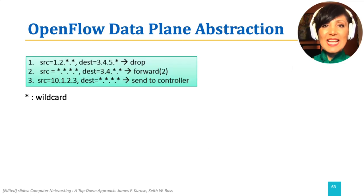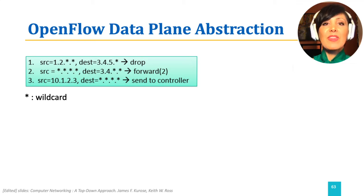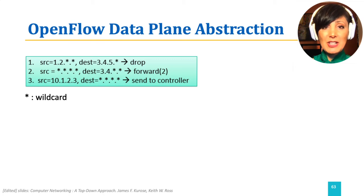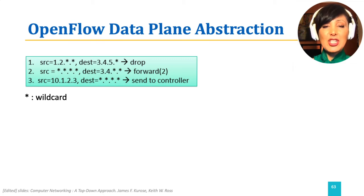Let's see some examples. Rule 1 says: if an incoming packet matches with the source having the first 16 bits of IP address matching 1.2, and the first 24 bits of the destination matching 3.4.5, drop the packet.